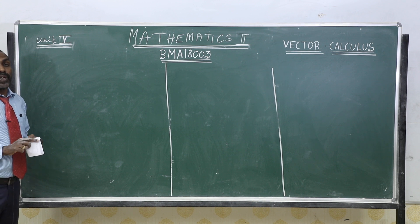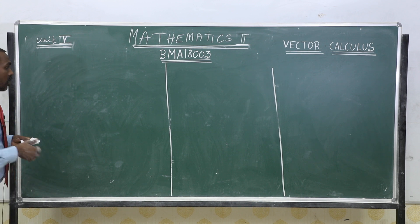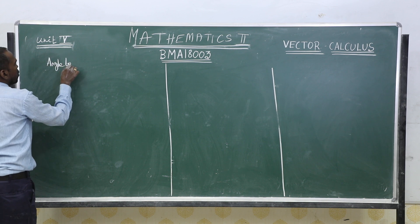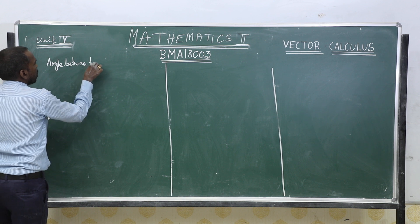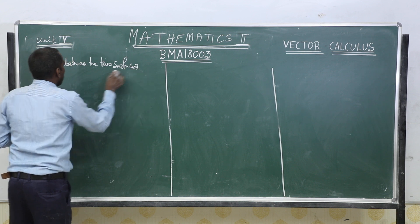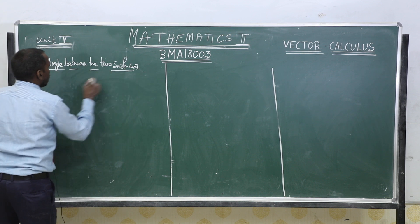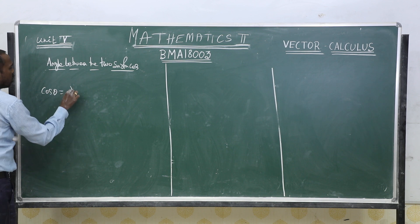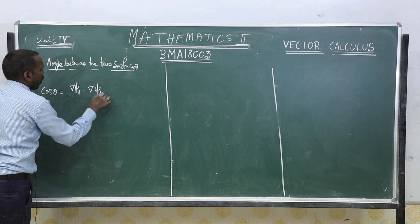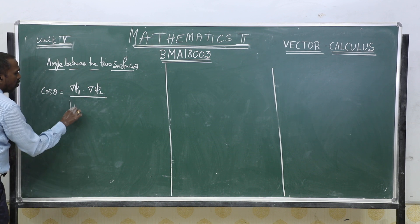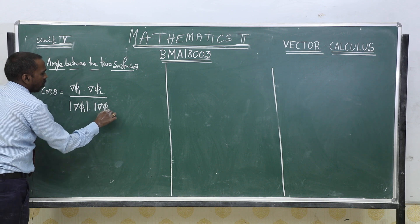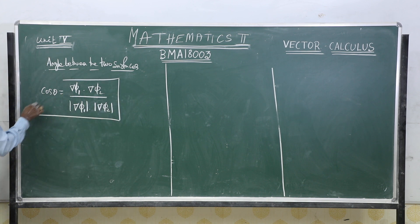The next topic will be the angle between two surfaces using vectors. The formula is: cos θ = (∇φ₁ · ∇φ₂) / (|∇φ₁| · |∇φ₂|). This is the angle between two surfaces formula.